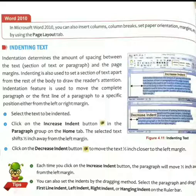The indentation feature is used to move the complete paragraph or the first line of a paragraph to a specific position, either from the left or right margin. Indentation creates a space between the text and the page margin.